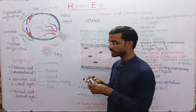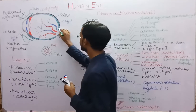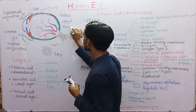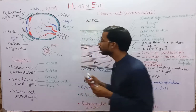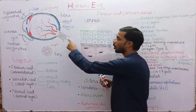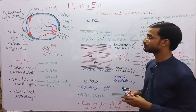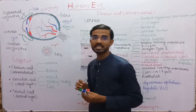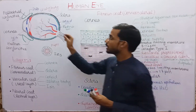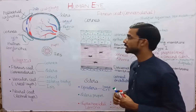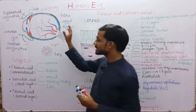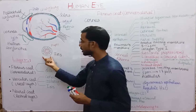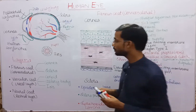The last layer is the retina, where the image forms. There is also the optic nerve. The lens present in the eye is a convex lens. This is the lateral view of the eye, and this is the top view.